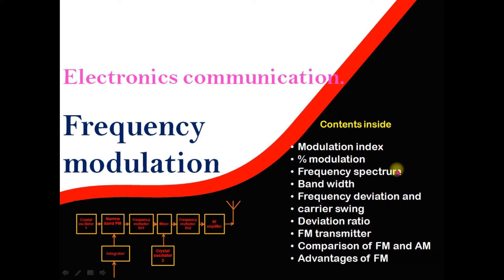Welcome to video number 8 on electronics communication. In this video we discuss complete frequency modulation. The contents include modulation index, percentage modulation, frequency spectrum and bandwidth, frequency deviation and carrier swing, deviation ratio, FM transmitter, and comparison of FM and AM, along with the advantages. All these topics are discussed now.